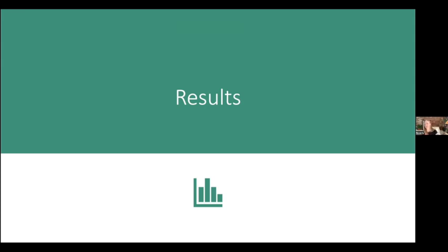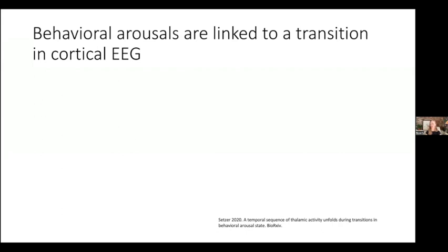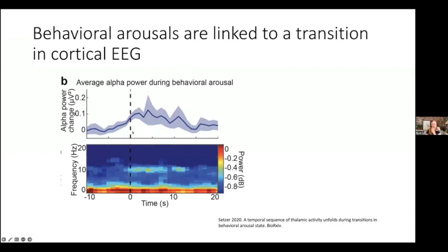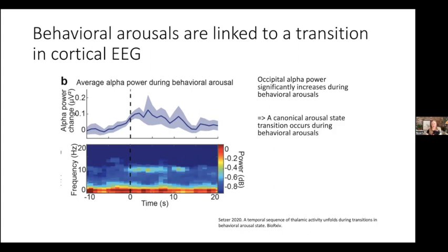Looking at results: we examined average occipital alpha power during behavioral arousal. The dotted black line marks behavioral arousal; the top shows average alpha power over all 66 behavioral arousals from six subjects, and the bottom shows the spectrogram. There is a significant increase in alpha power during behavioral arousal — also reflected in the spectrogram as a stripe returning when people wake up. This confirmed that a canonical arousal state transition is occurring during behavioral arousals.